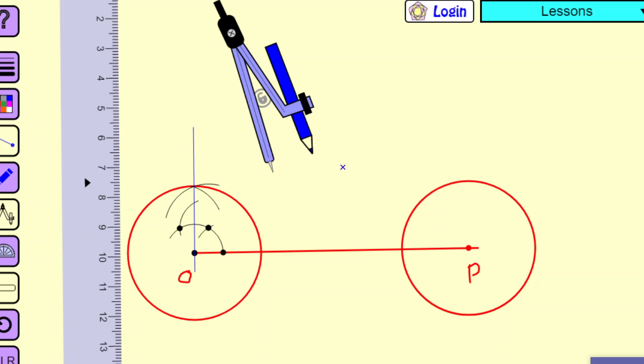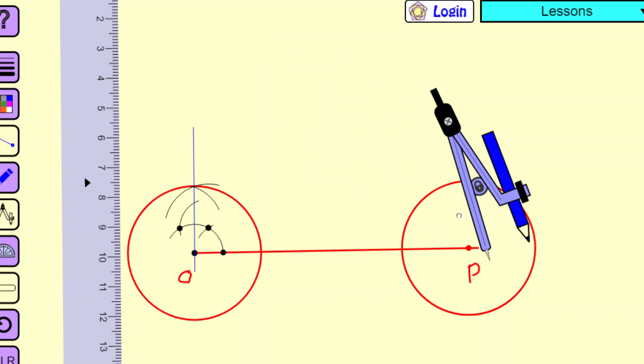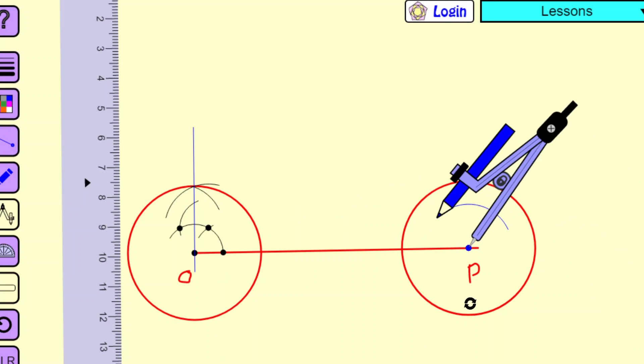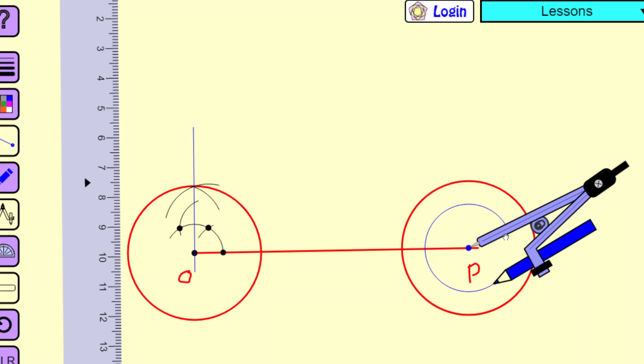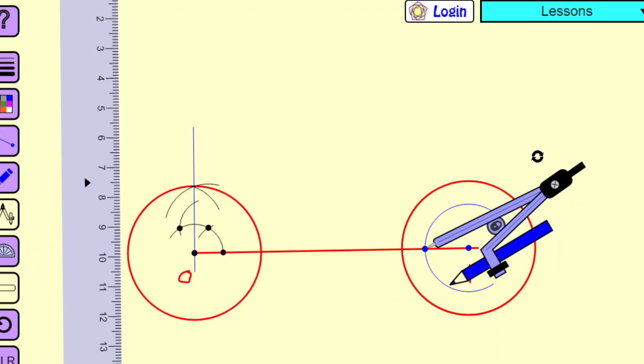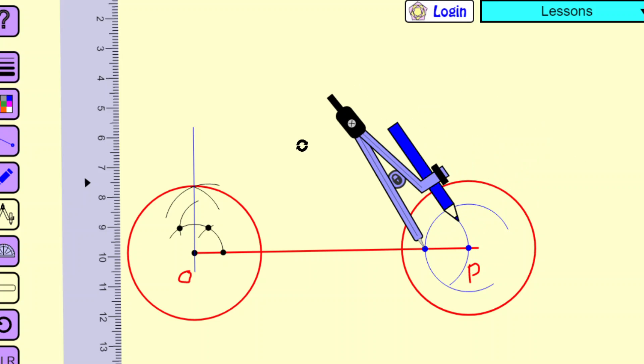Similarly, we have to proceed here. Let us say I am bringing it here. So you draw an arc here with the same radius. You go through this point. Draw another arc.